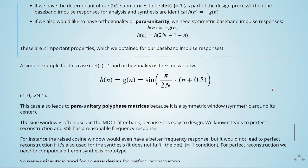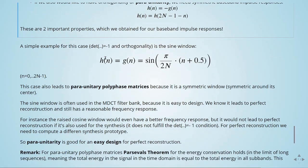A simple example for this case where the determinant is equal to minus 1 and orthogonality is the sine window. And the sine window is given here.